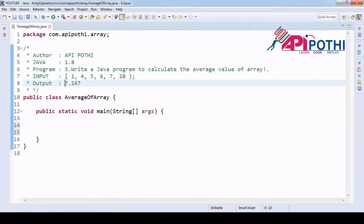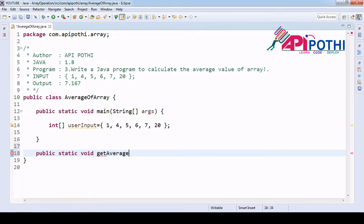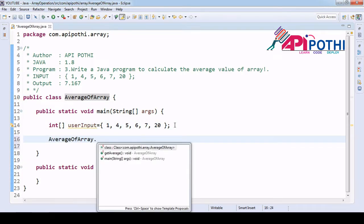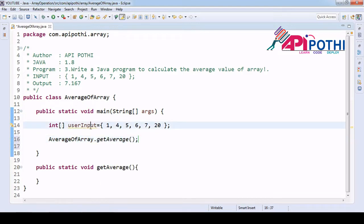Integer userInput equals this one. Public static void getAverage. So here we will pass the parameters. Let me call this method first, getAverage. We need to pass this array as an argument which is input.